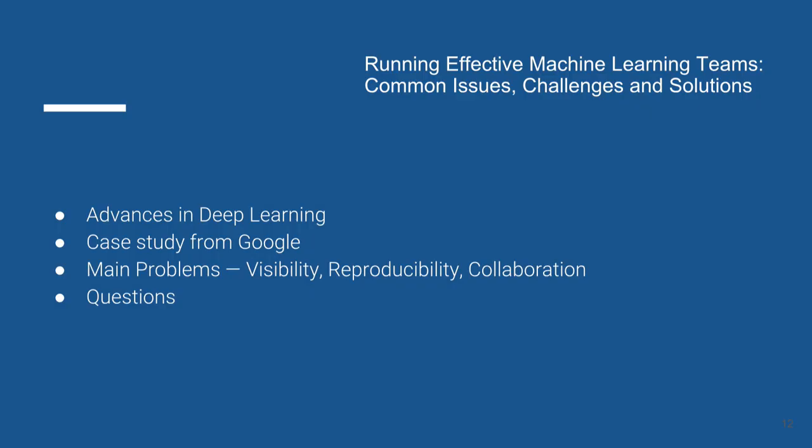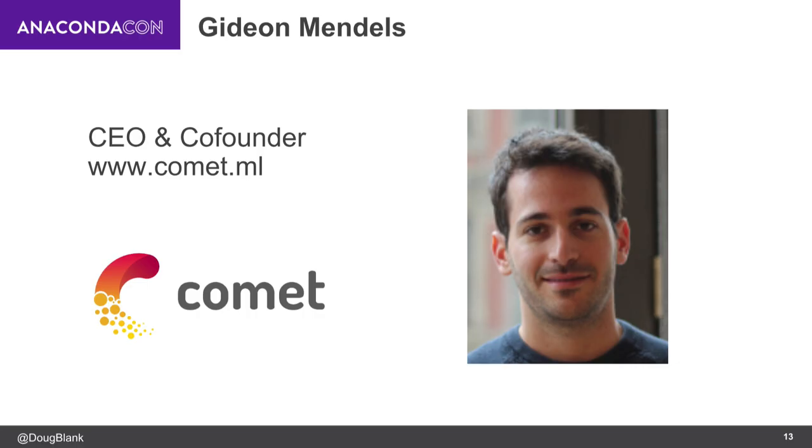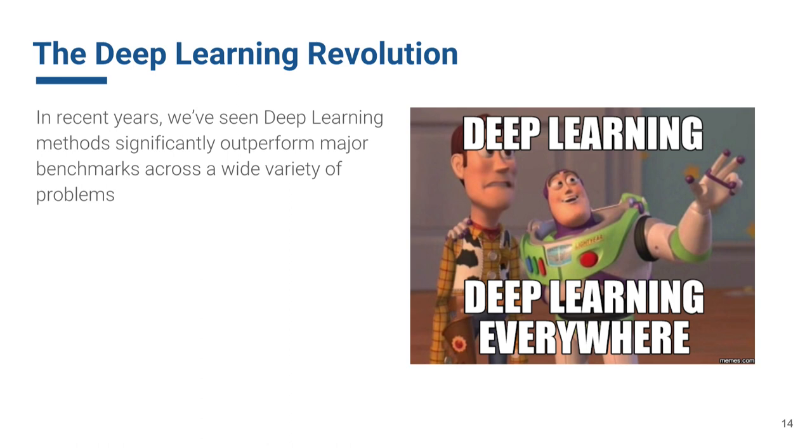But I'm not going to talk about that today. I'm going to talk about teams. The agenda is I'm going to talk about advances in deep learning over the years, give a case study about the problems that arise in software engineering for machine learning, talk about the main problem areas, and then take some questions. First off, this is not my story. This is really his story from our CEO, Gideon Mendels, and his case study that I'm going to describe.